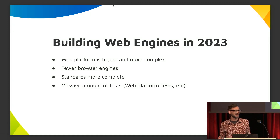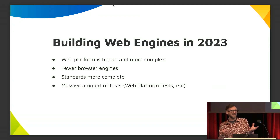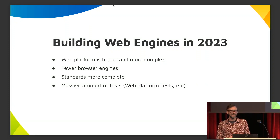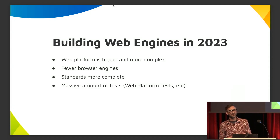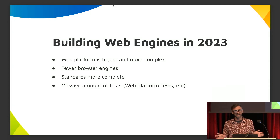There are also fewer browser engines. The MSHTML Trident engine used in Internet Explorer is gone. Opera is gone. Essentially, nowadays there's WebKit, forks of WebKit like Chrome, and then Gecko — and that's basically it for web browser engines.